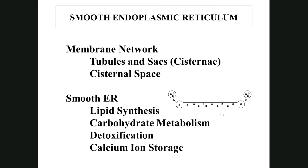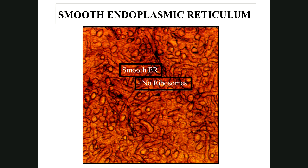The smooth ER has no ribosomes on its surface. It is involved in lipid synthesis — making phospholipid membrane that's pinched off as vesicles — carbohydrate metabolism, detoxification, and calcium ion storage in muscle cells.